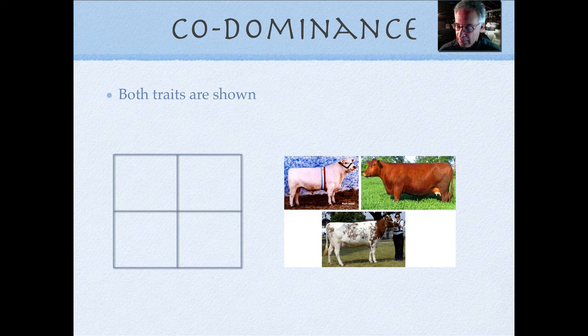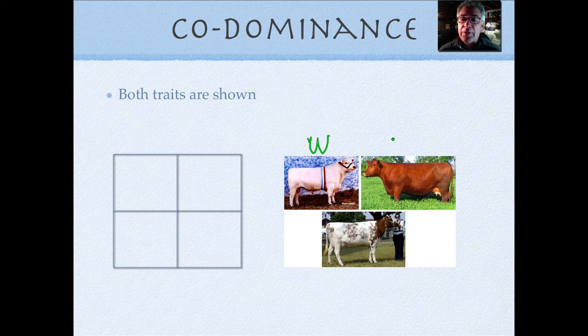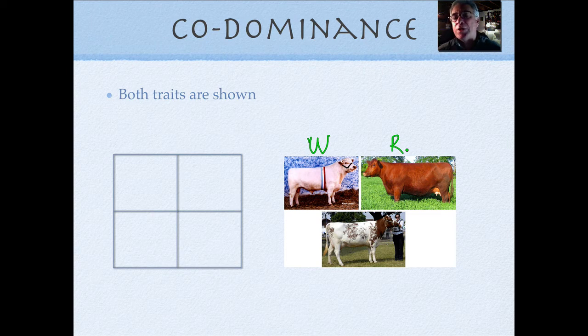So let's just call coat colors here. For instance, in this one, we're going to call this one W. And then we're going to call this one red. Both of them are fighting out for dominance. One's not going to be better than the other. So that's why we give them a different letter than we've done before.